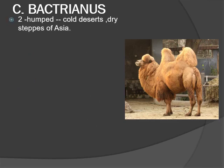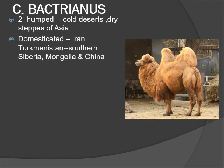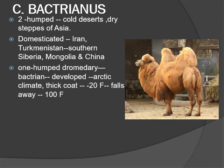The Bactrian or two-humped camels exist in cold deserts and dry steppes of Asia. The two-humped camel was domesticated on the border of Iran and Turkmenistan, and spread to an area bordered by southern Siberia, Mongolia, and China. It is generally believed that modern one-humped dromedary evolved from the two-humped Bactrian species, which likely developed as a result of Arctic climate, with its thick coat that can withstand temperatures of minus 20 degrees Fahrenheit and that falls away when temperatures reach 100 degrees Fahrenheit.